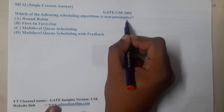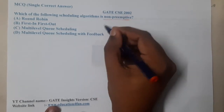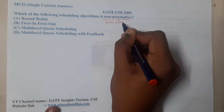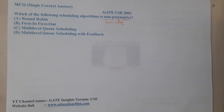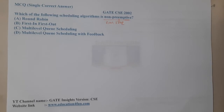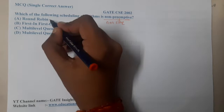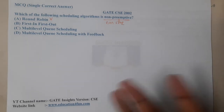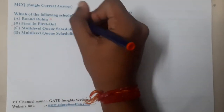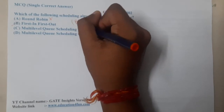Non-preemptive means it is something like a non-stop bus. Option A says Round Robin — if you remove preemption from Round Robin, it cannot do anything right, so it will work as First Come First Served, which is wrong. Option B says First In First Out — we don't break anything in FIFO; whoever comes first gets the chance, so it's a non-preemptive process. Hence, B is the correct answer.